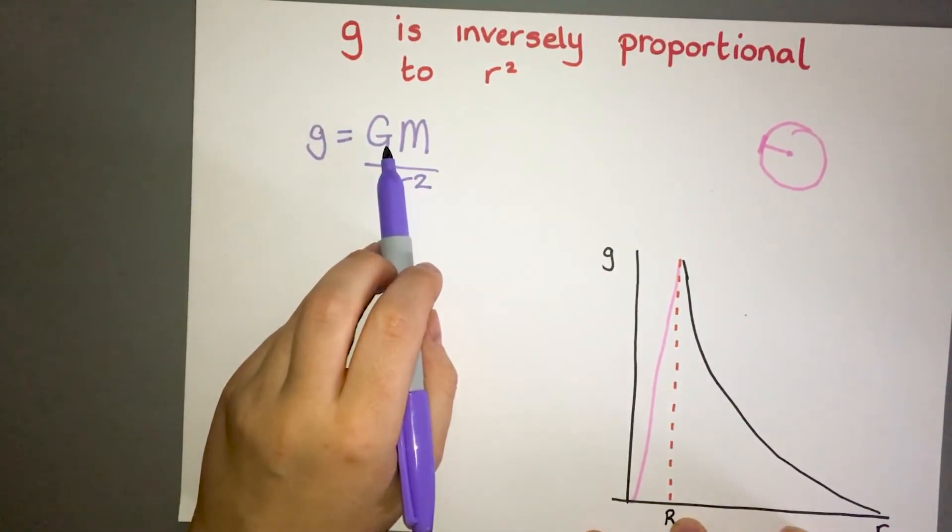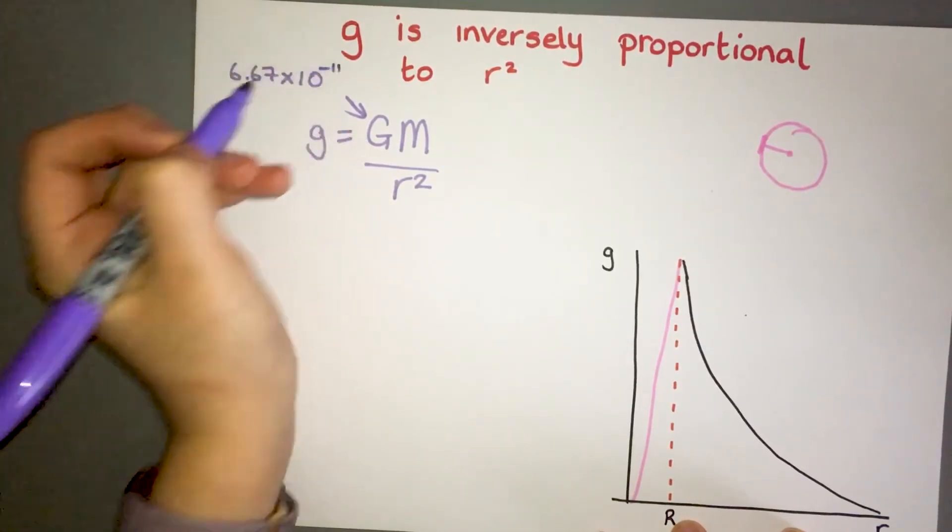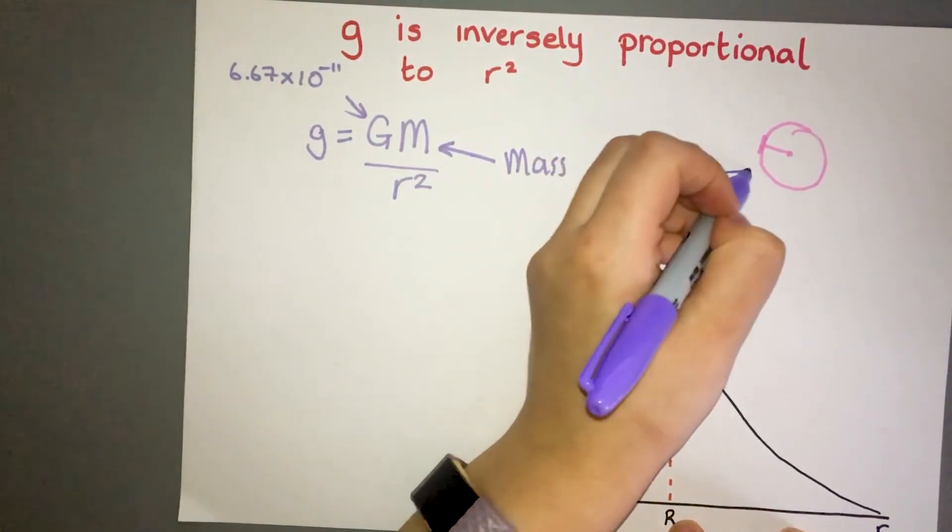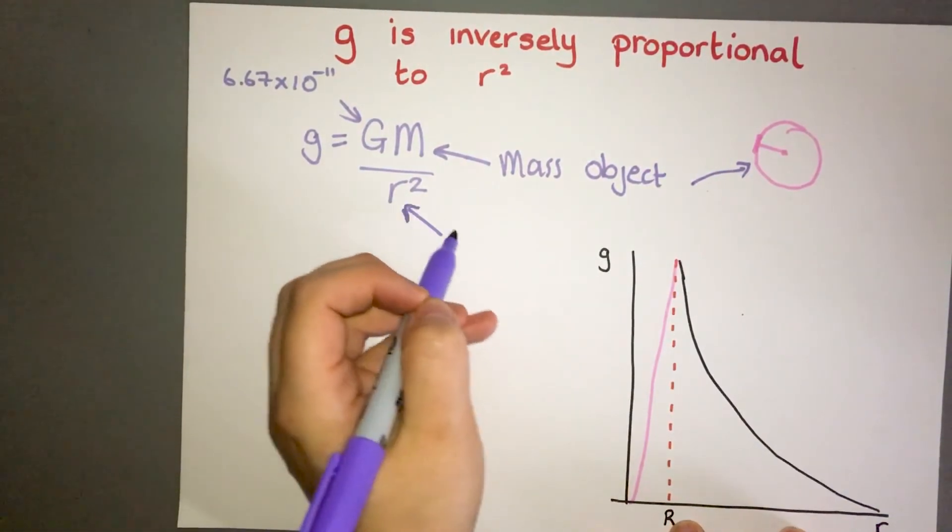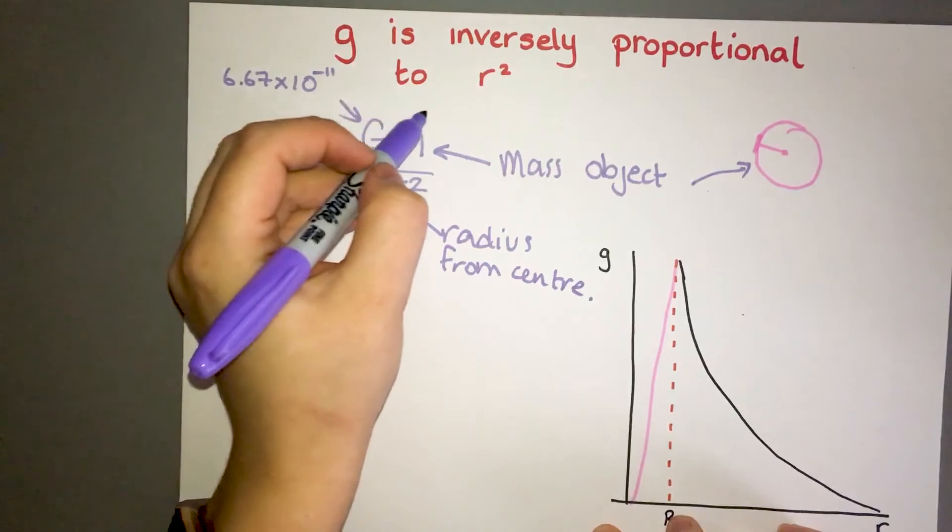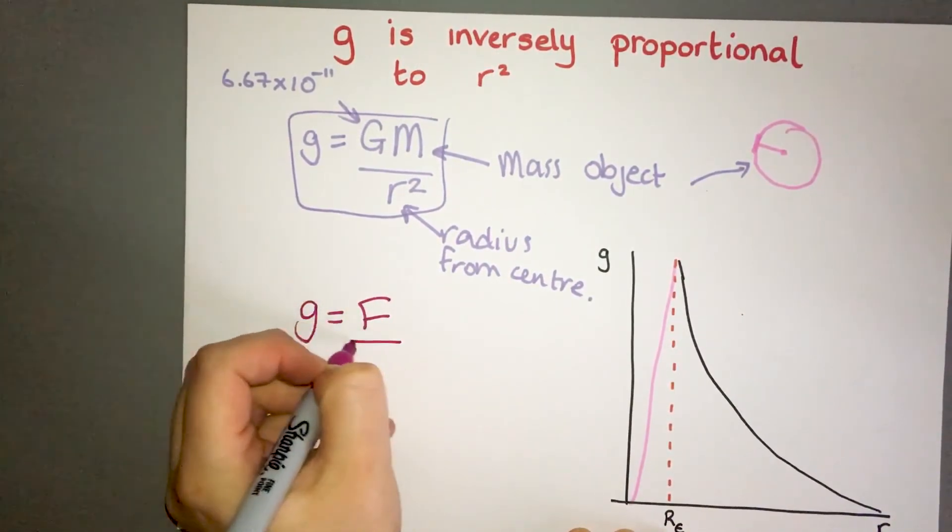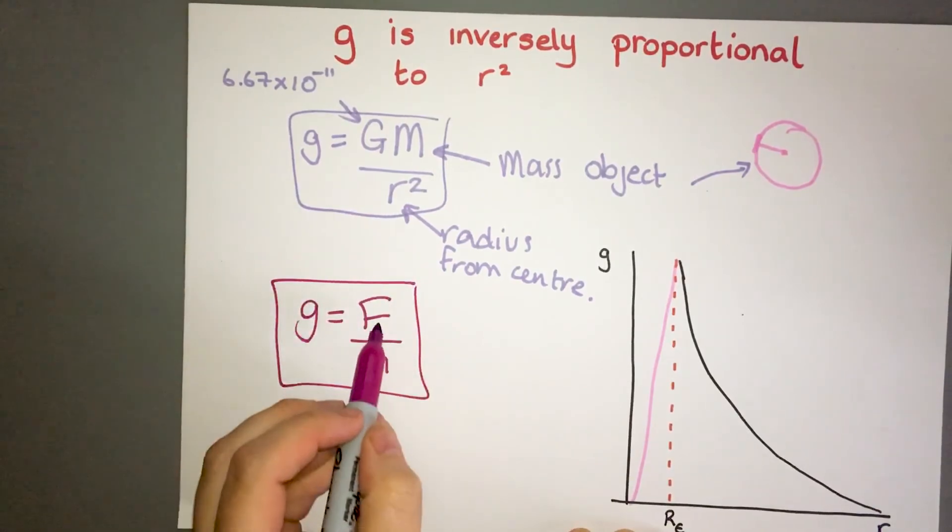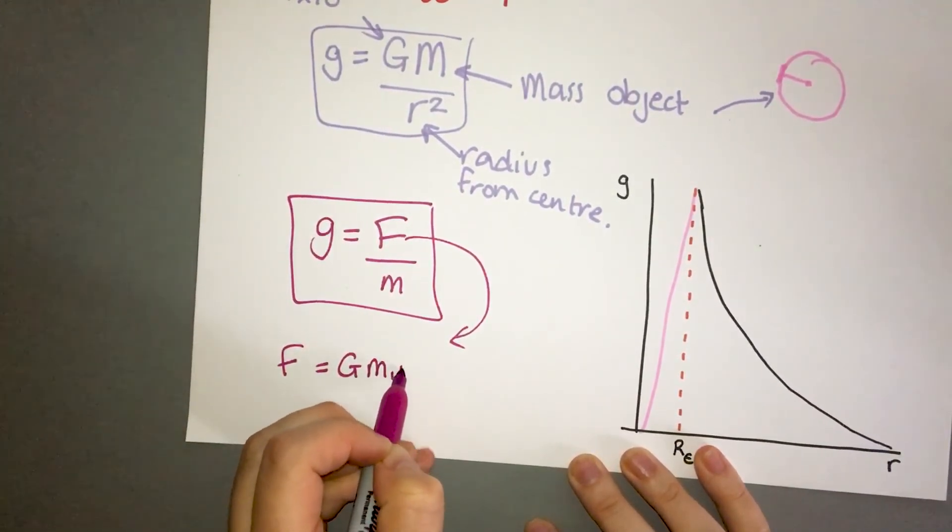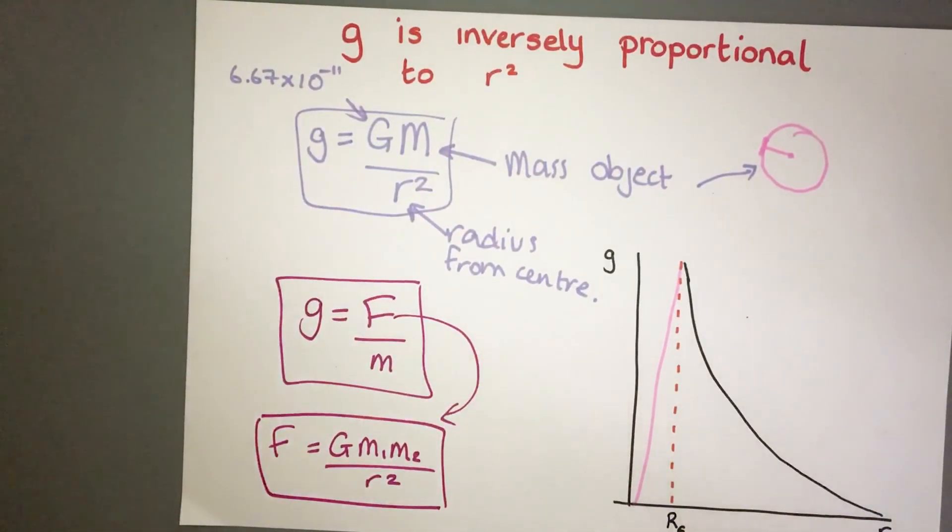You have another equation for g that you can use: g equals big G times m over r squared. Big G is your 6.67 times 10 to the minus 11, m is your mass of your object, in this case the earth, and r is your radius from the center. So little g has been calculated in two ways. You've got that way of doing it and you also got this way, and then obviously your F can be found using these equations. These three equations can all link together to help you find out your answers.